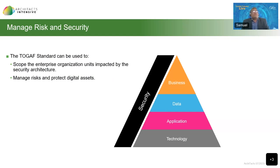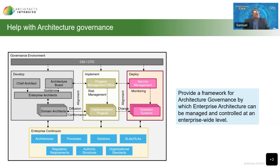The standard also helps you manage any risk and security concerns associated with a business transformation effort. The standard deals with these concepts throughout your architecture development cycle — this is baked into the ADM cycle. This diagram illustrates the fact that security is a cross-cutting concern that cuts across all four domains. This is an ongoing exercise — we deal with risk and security across all phases of the ADM. The TOGAF standard also provides you with a framework for architecture governance, with the help of which your enterprise architectures can be managed and controlled at an enterprise-wide level. This diagram highlights the major structural elements required for any architectural governance initiative.